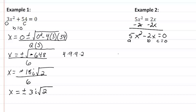So now we get x equal to the opposite of our b, plus or minus the square root of b squared minus four times our a, times our c, all over two times our a.